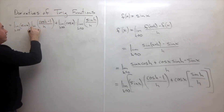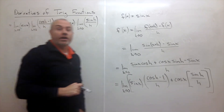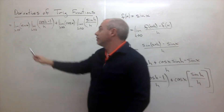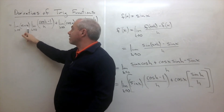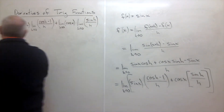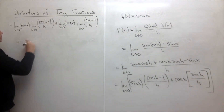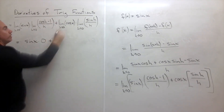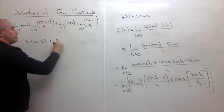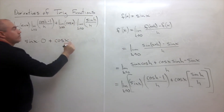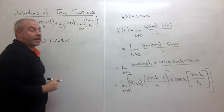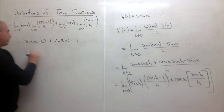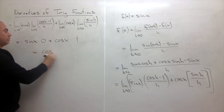The limit as h goes to zero of cosine h minus one over h is one of our two important limits, and we know it equals zero. Sine of x has no h's, so that stays as sine of x. Similarly, cosine of x has no h's. And the limit as h goes to zero of sine h over h is our other important limit, which equals one.